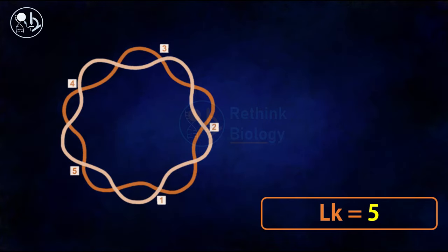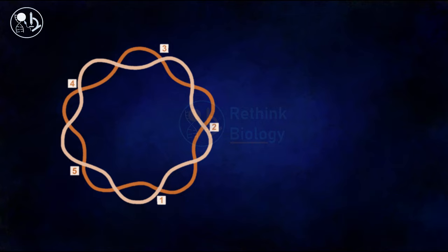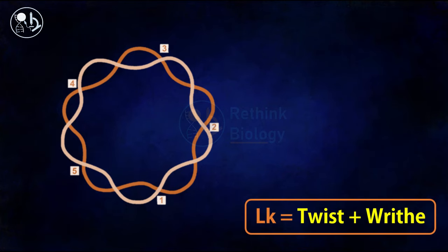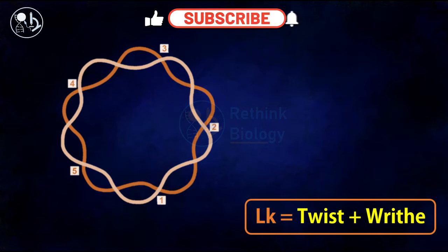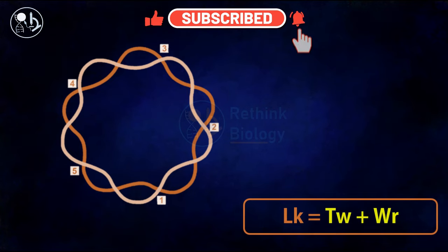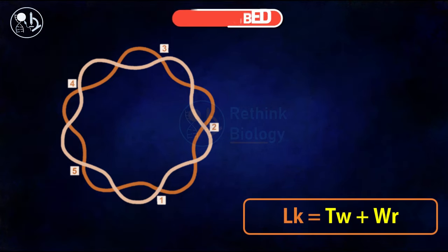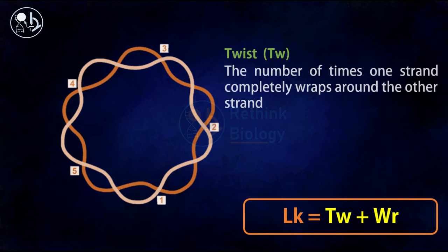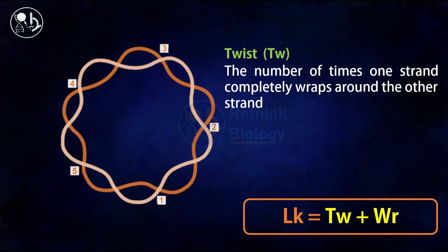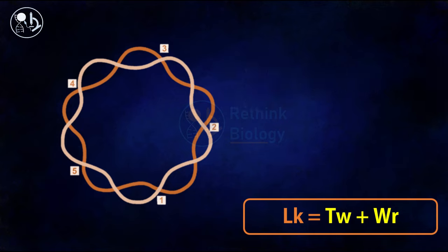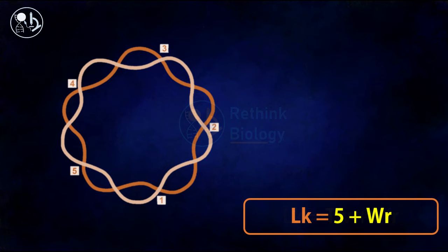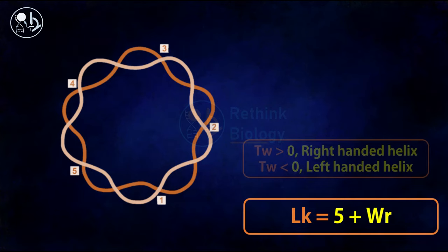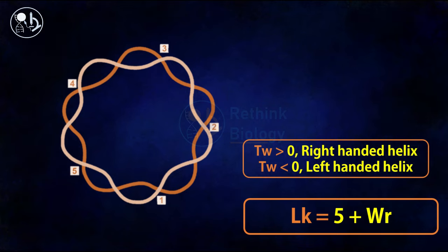In this case, the linking number is five. Linking number is the sum of two geometry components called the twist and the wreath. Twist is the number of times one strand completely wraps around the other strand. In this case, the twist number is five. Twist is greater than zero in right-handed helix and less than zero in case of left-handed helix.